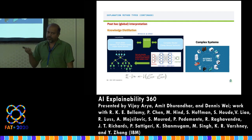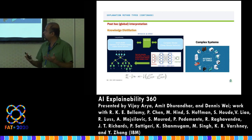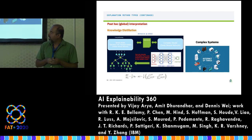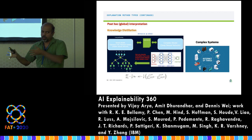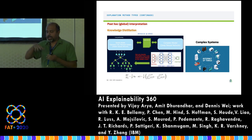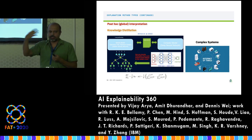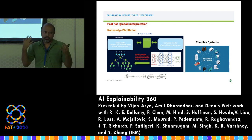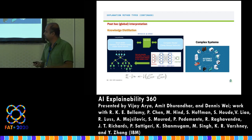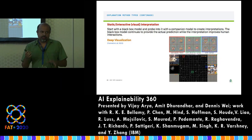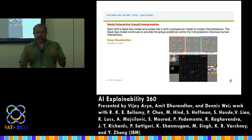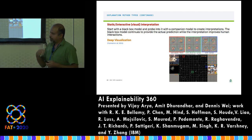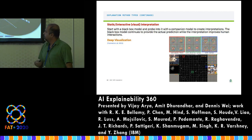The saliency method is more local — you give a specific example and explain that example. There are also more global methods. One very popular method is knowledge distillation: if you have a neural network giving predictions and want to understand globally what's happening, you can take those predictions and fit a directly interpretable model to gauge what's generally happening. You can also visualize intermediate layers of the neural network to see what features those layers are picking up.